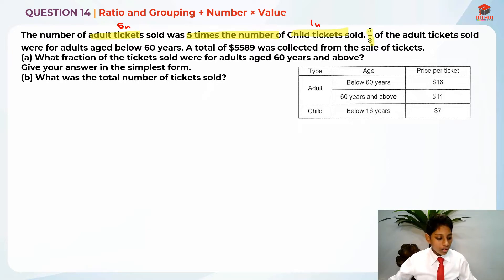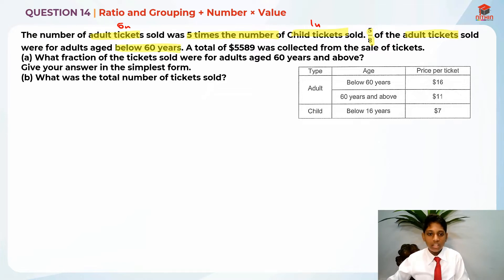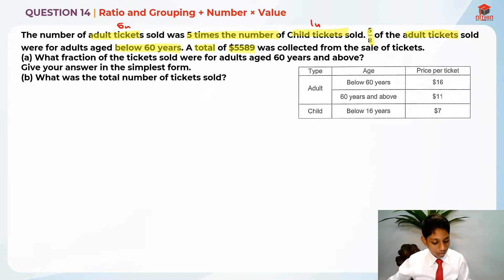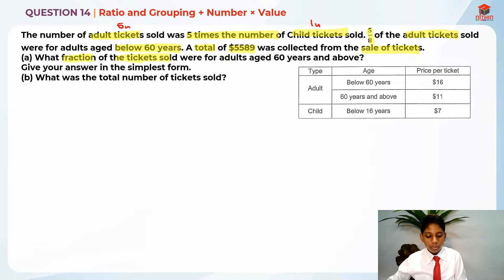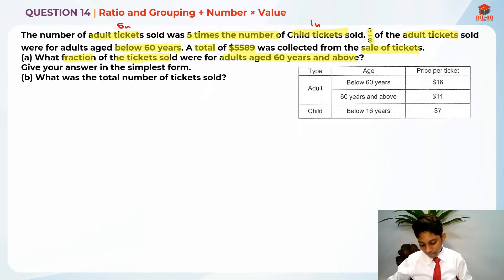5/8 of the adult tickets sold were for adults each below 60. A total of $5,589 was collected from the sale of tickets. The question asks: what fraction of the tickets sold were for adults aged 60 and above? So it's basically 60 and above over the total.